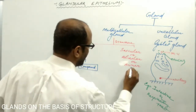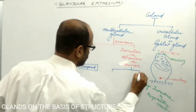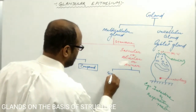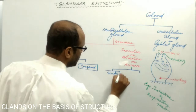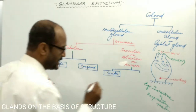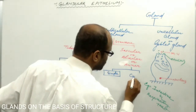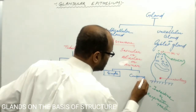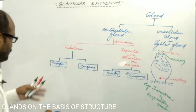Similarly, the saccular gland may also be simple — if a single main duct is present — or compound if several main ducts are present.